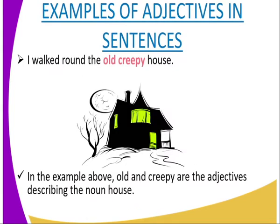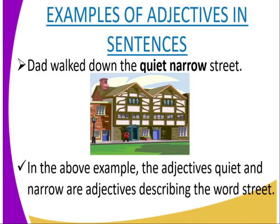Another example: 'I walked around the old, creepy house.' In this sentence, the noun is 'house' and the adjectives are 'old' and 'creepy.' As you can see from the picture, 'old' and 'creepy' are adjectives describing the noun 'house.'